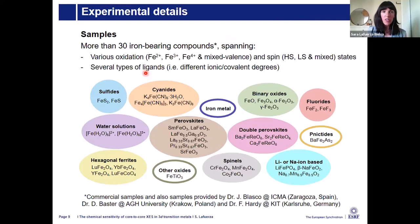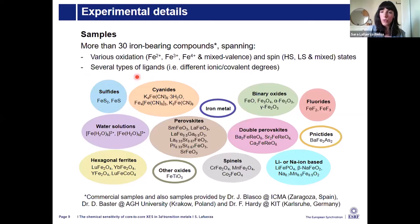Regarding the experimental details: we collected more than 30 iron-containing compounds with various oxidation and spin states — iron 2+, iron 3+, 4+, mixed-valence samples, and samples with low and high spin states. Importantly, we had samples covering different types of ligands with different ionic and covalent degrees: sulfides, cyanides, oxides, fluorides, and iron ions in solution. Most were solid-state samples, though some were commercial and some provided by collaborators.